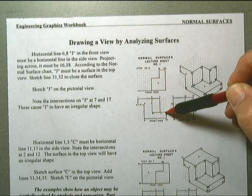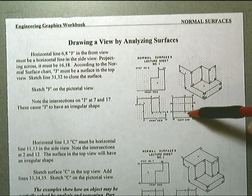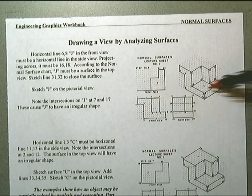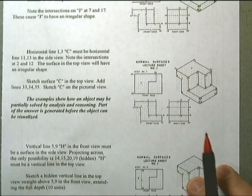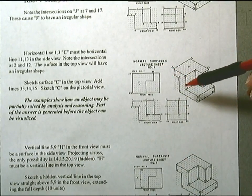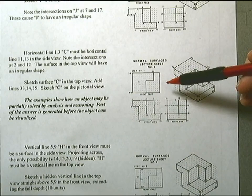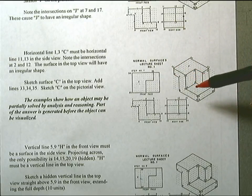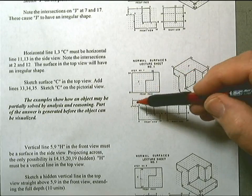With this width of line, here's a horizontal line. A horizontal line creates a top normal surface. When you look at the horizontal line 1,3,C, it must be horizontal line 11,13. So here, surface C becomes...